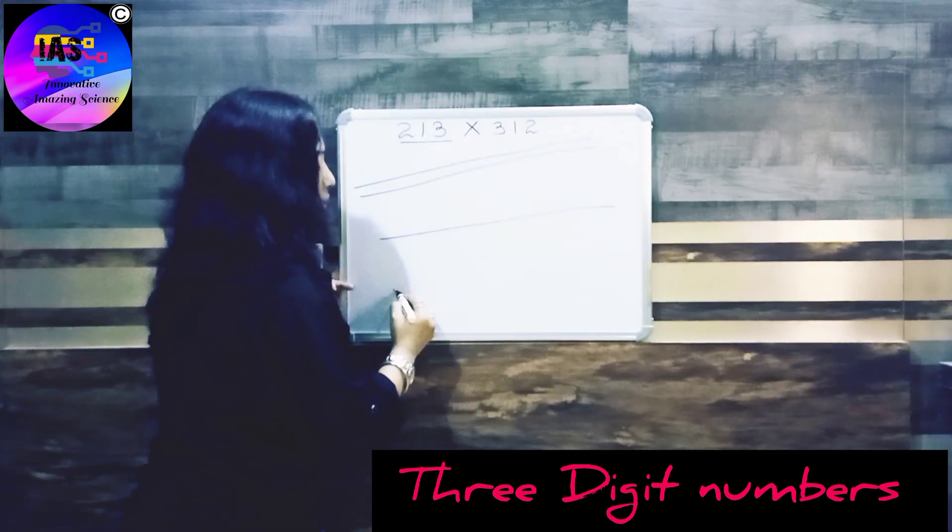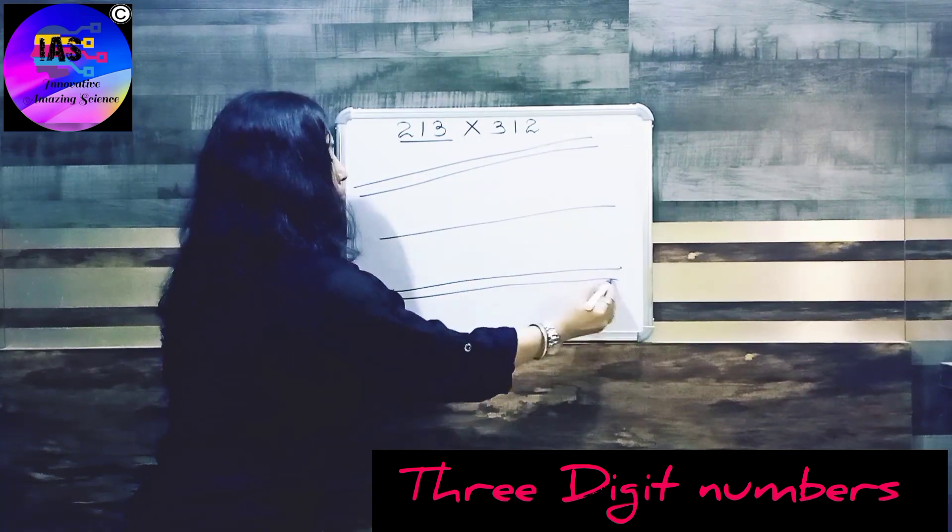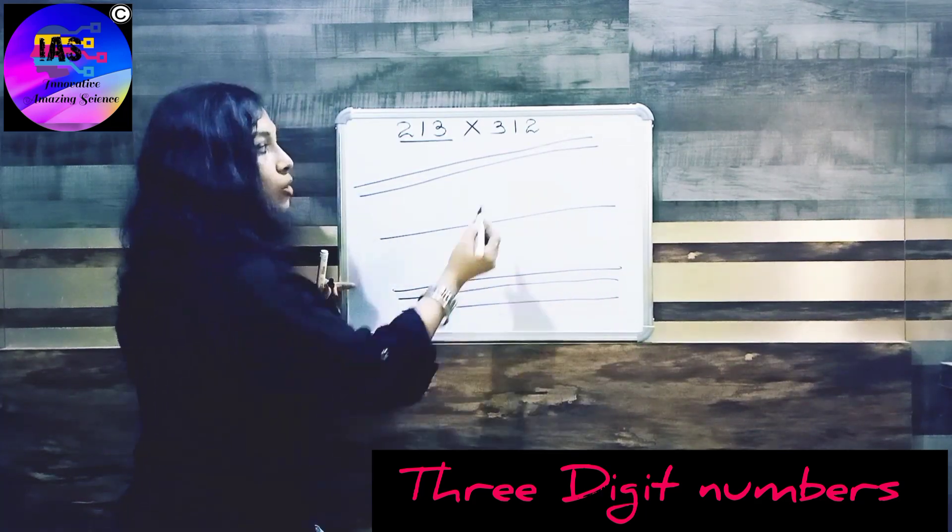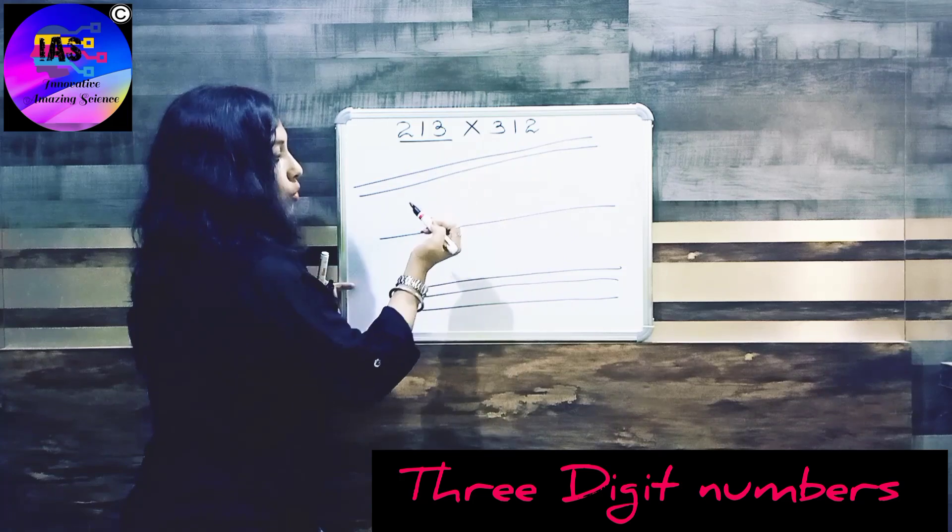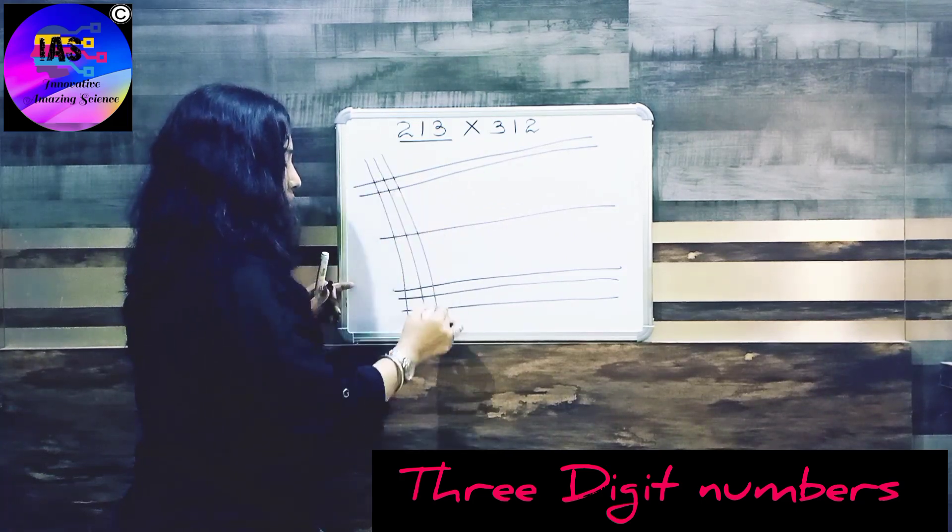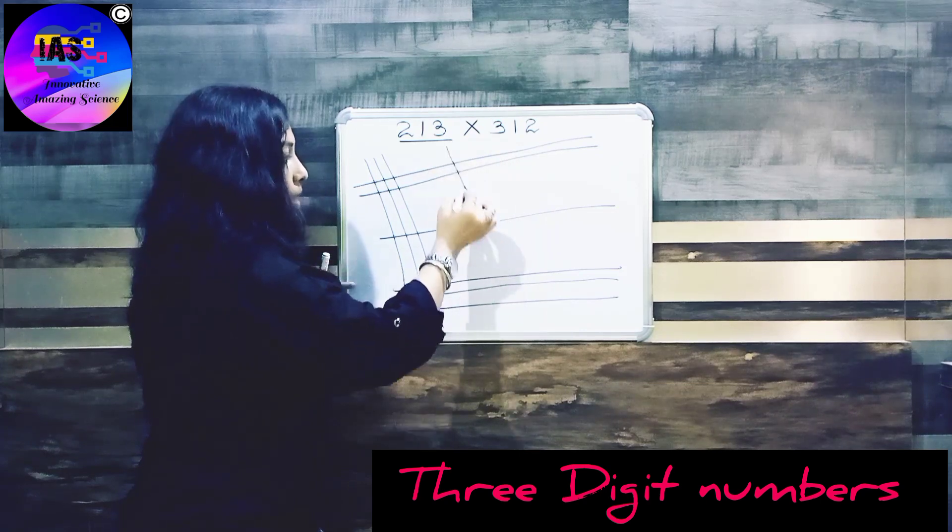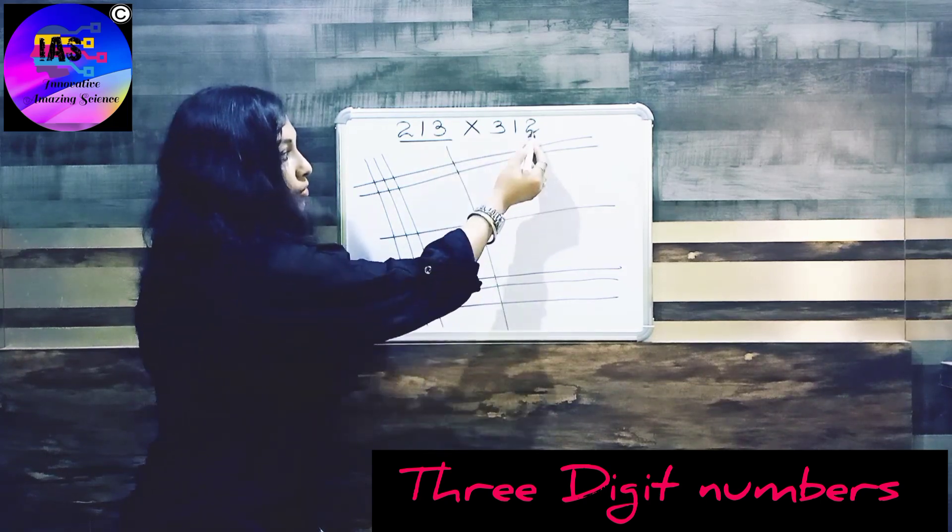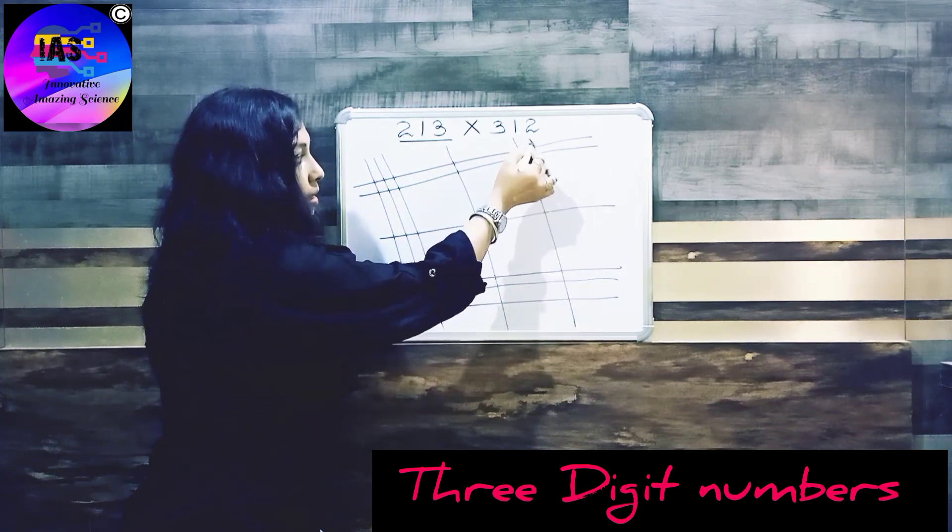So our second number is 312. Here I go: one, two, three. Middle number is 1, and next I have 2: one, two.